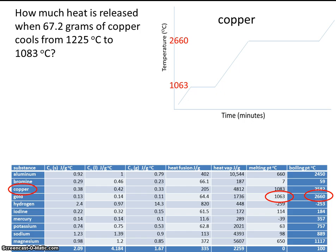All right, now let's go back to our problem. How much heat is released when 67.2 grams of copper cools from 1225 to 1083? Well, 1225 and 1083, that's in between the melting point and the boiling point. So we're somewhere here. That means copper is going to be a liquid.